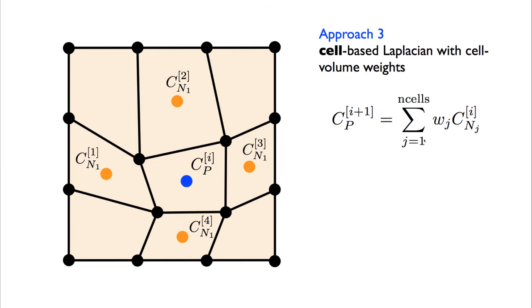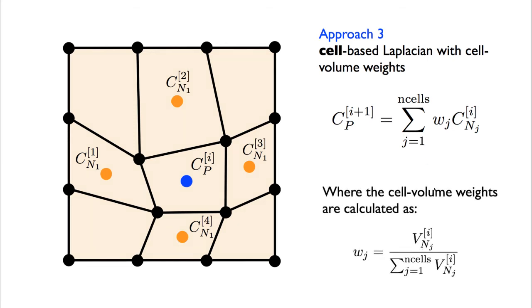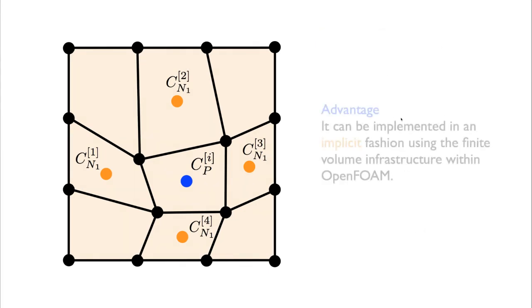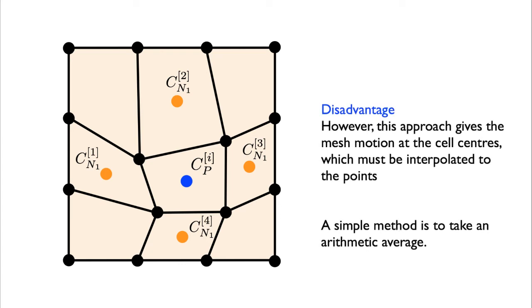The potential advantage of doing it this way instead of based on points is, if we write in terms of cell centers, then we can use the finite volume infrastructure within OpenFOAM. So it means we can write these smoothing equations implicitly rather than explicitly. Of course, the disadvantage is to move the mesh. We need to move the mesh points, but this method will give us the motion of the cell centers. So that means we have to average or interpolate the cell center motions to the points. So a simple method is just to use arithmetic average. There are other methods as well.